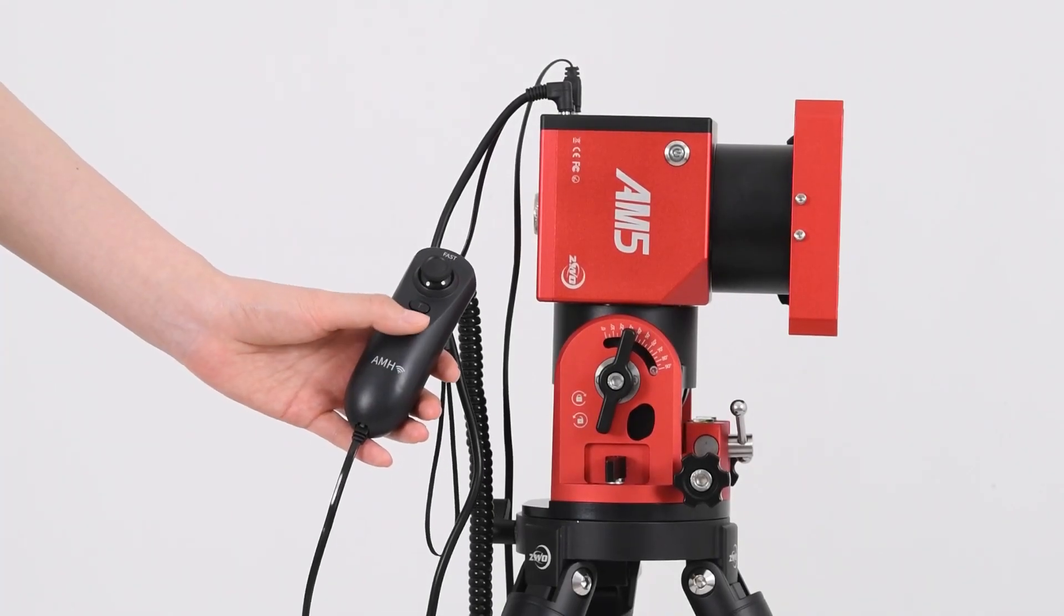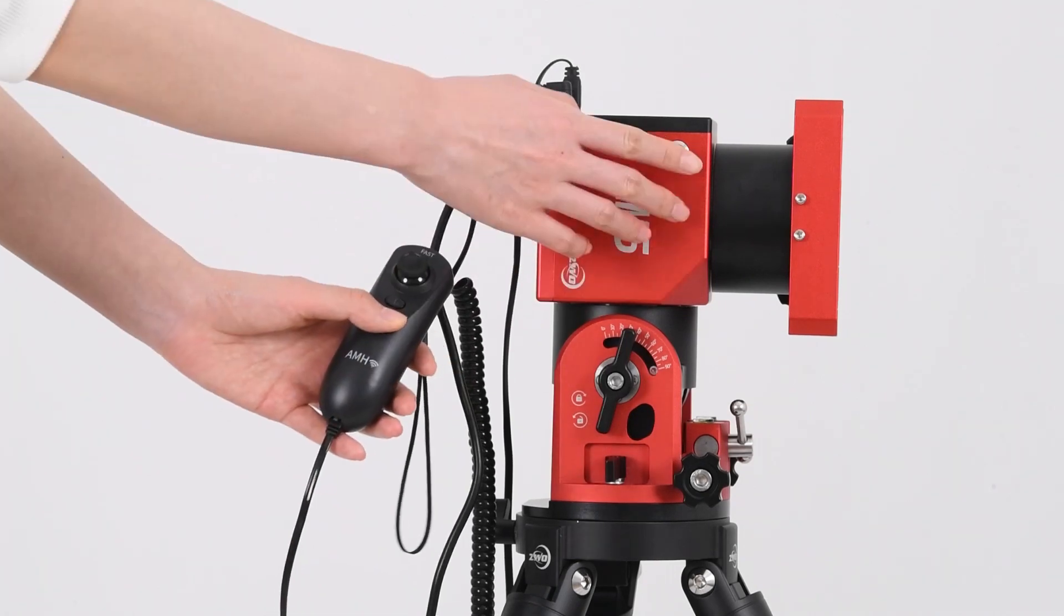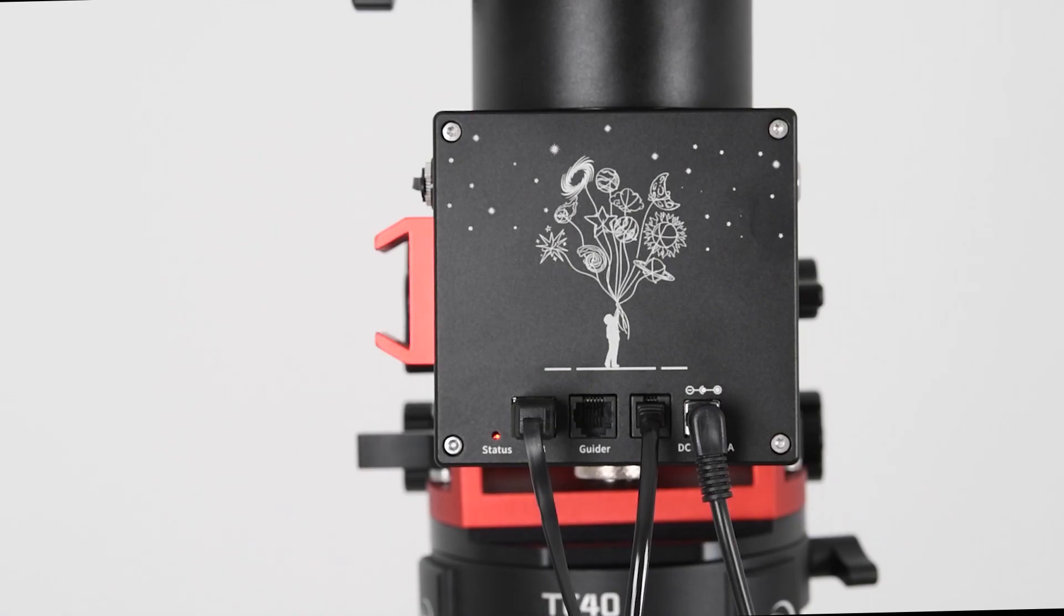To enter equatorial mode, hold down the cancel button while the mount is off and press the power switch button. The light will turn red if done correctly.